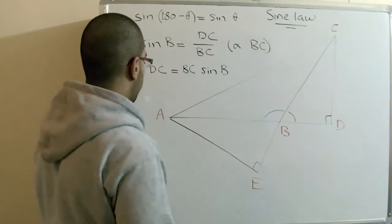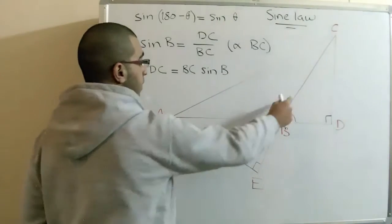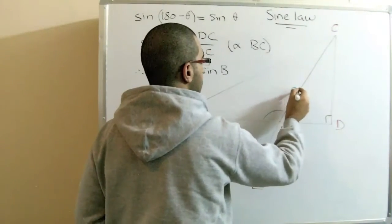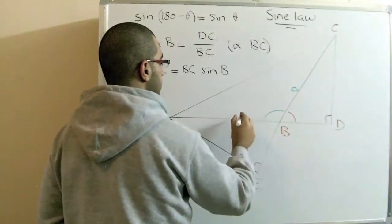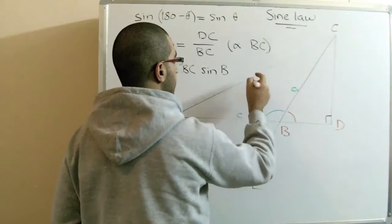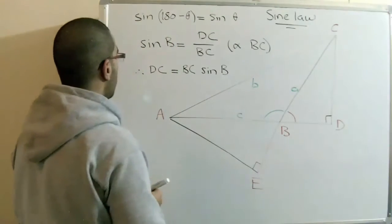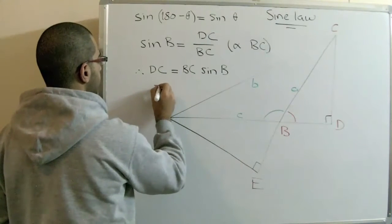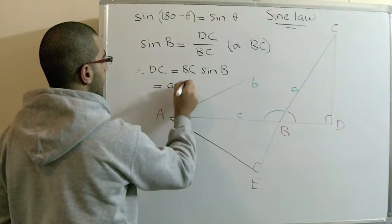And as we said before, we name the sides according to the angles opposite to them. So this will be A, this will be C, and this will be B. So DC equals finally, A sin B.